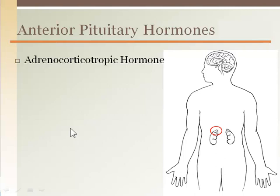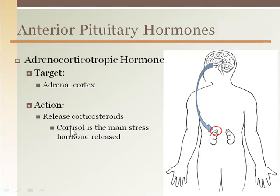Adrenocorticotropic hormone does what the name says. Adreno indicates it's going to the adrenal gland. Cortico indicates it is going to the cortex region to release corticosteroids, and tropic indicates it is target-specific to that area. Once adrenocorticotropic hormone targets the adrenal cortex, it releases a family of hormones called glucocorticoids — cortisol is the main stress hormone in this family. The process begins when the hypothalamus detects a state of stress and sends out corticotropin releasing hormone through the hypophysial portal system to the anterior pituitary, which then sends out adrenocorticotropic hormone targeting the adrenal cortex.